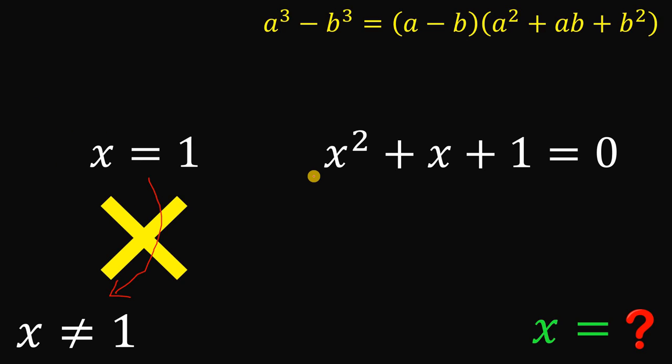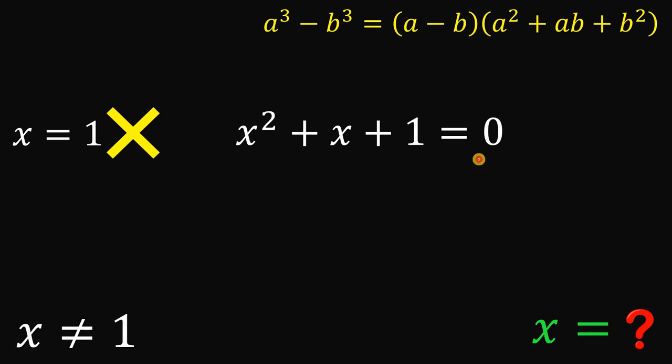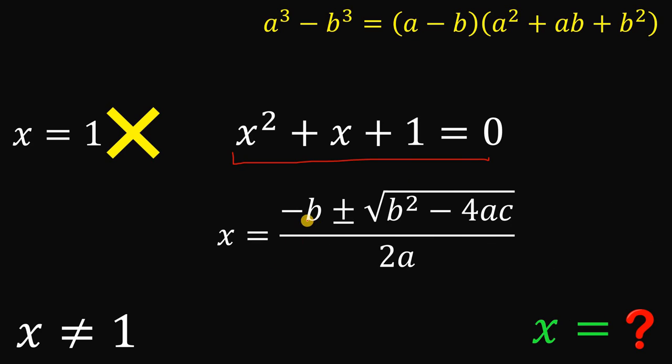Alright. So the value of x that will satisfy the equation will come from using this equation: x squared plus x plus 1 equals 0. So let's focus on this equation. Now this is not factorable, so we can use the quadratic formula to solve for the value of x. So quadratic formula: x must be equal to negative b plus or minus square root of b squared minus 4ac all over 2a.